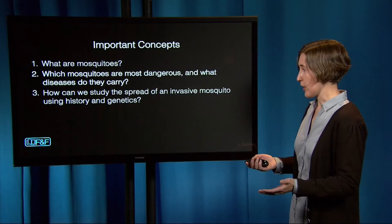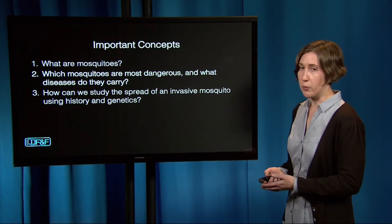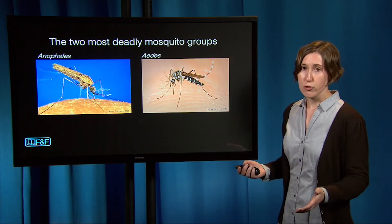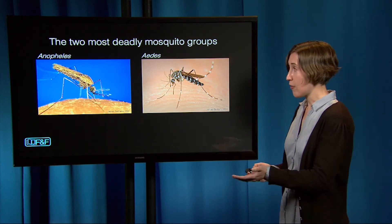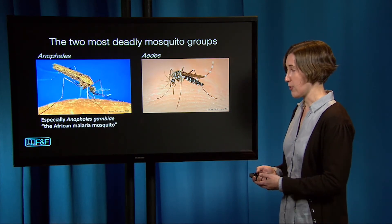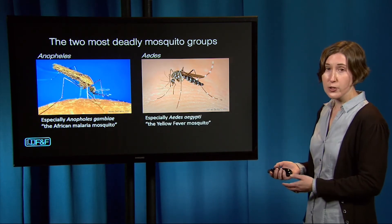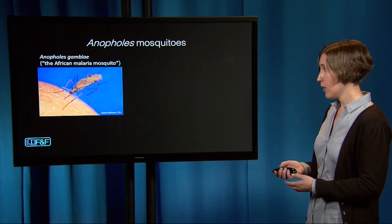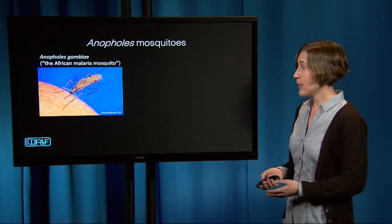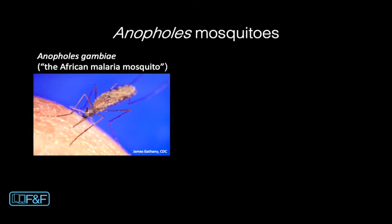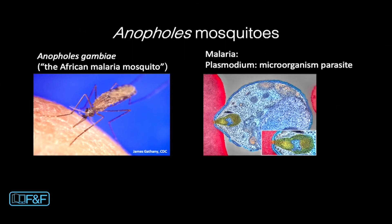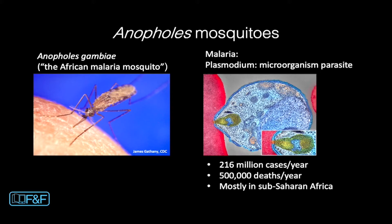The two most dangerous groups of mosquitoes are Anopheles, especially the species Anopheles gambiae, and Aedes, especially the species Aedes aegypti. The Anopheles group carries malaria, which is a microorganism parasite that infects red blood cells. It's a huge issue and causes about 500,000 deaths a year, mostly in Africa.